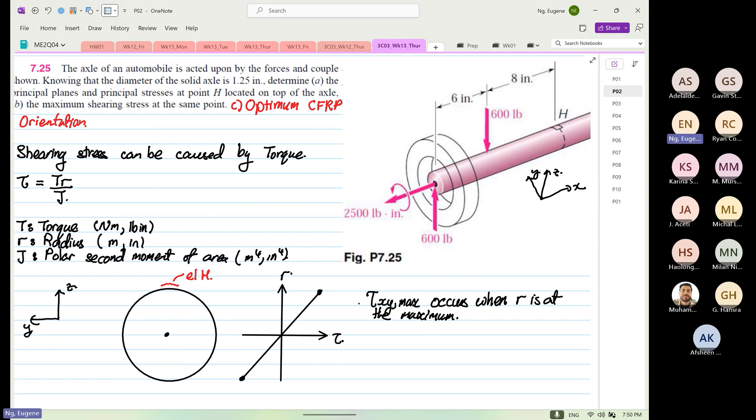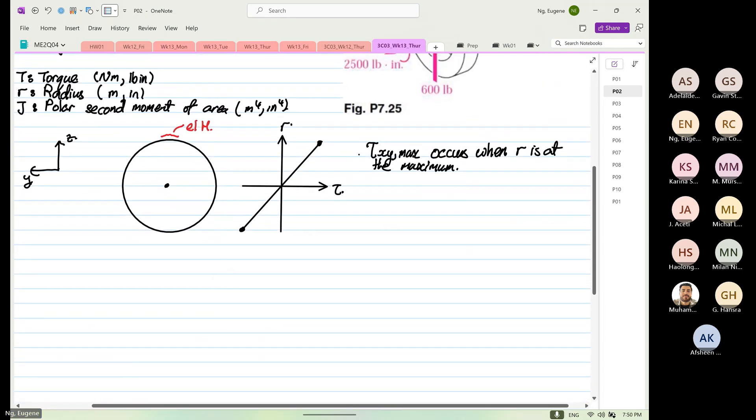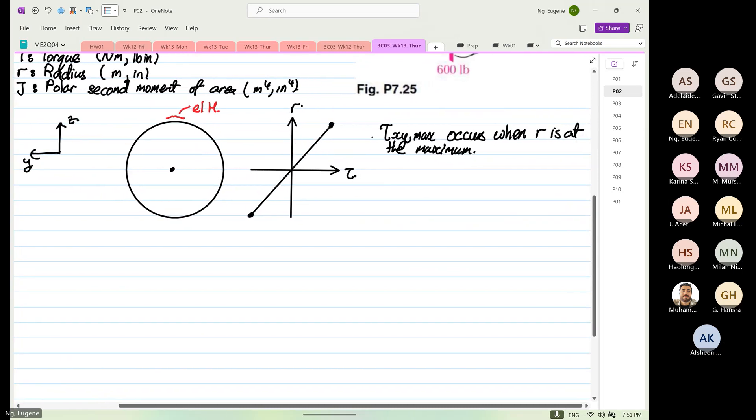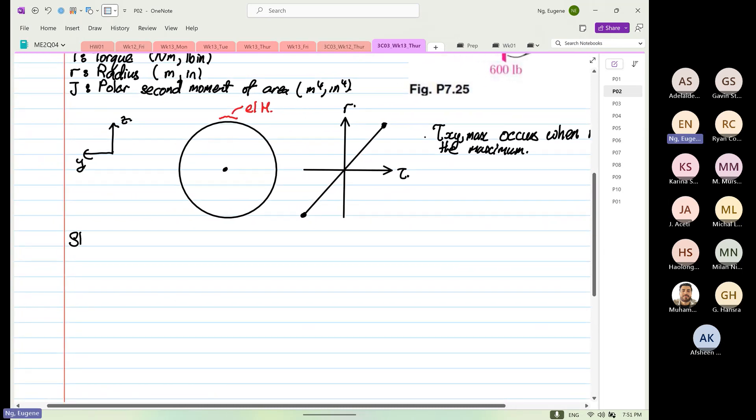Now, the next thing we are going to consider: let's lift up the torsion and consider the shear force. So if you look at the shear force, shear stress induced by the shear force, the formula is τ equals VQ over IT.